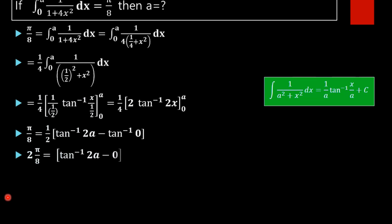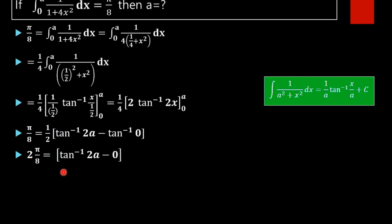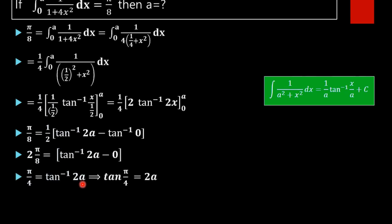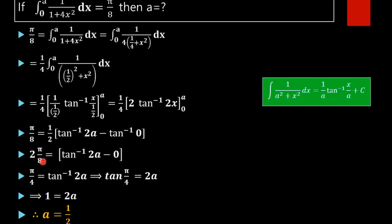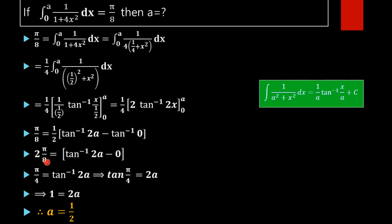Multiplying both sides by 2, we get 2π/8 = tan⁻¹(2a), that is π/4 = tan⁻¹(2a). This implies tan(π/4) = 2a. Since tan(π/4) = 1, we get 1 = 2a, which implies a = 1/2. So the required result is a = 1/2.